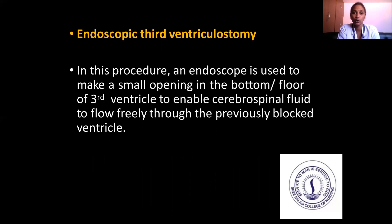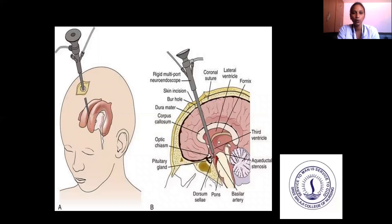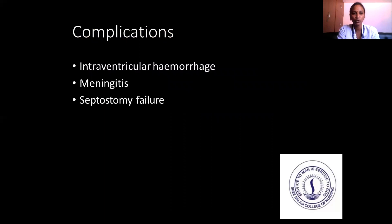Endoscopic third ventriculostomy: in this procedure, an endoscope is used to make a small opening in the floor of the third ventricle to enable CSF to flow freely through previously blocked ventricles. A hole is made at the top of the head and the procedure is performed endoscopically. Complications include intraventricular hemorrhage, meningitis, and stoma failure.